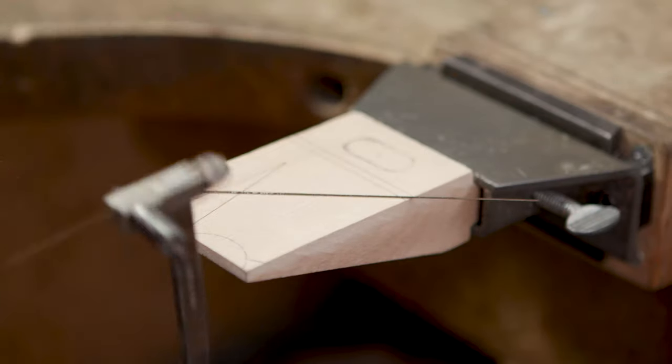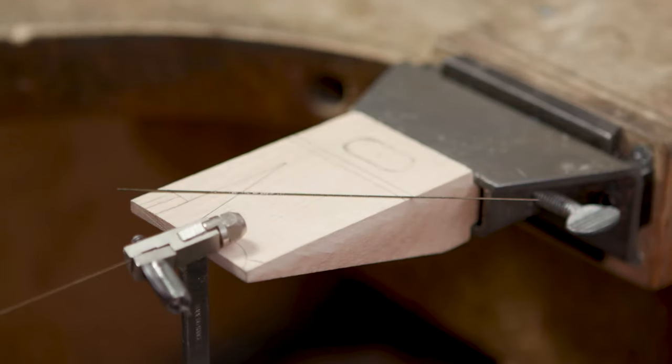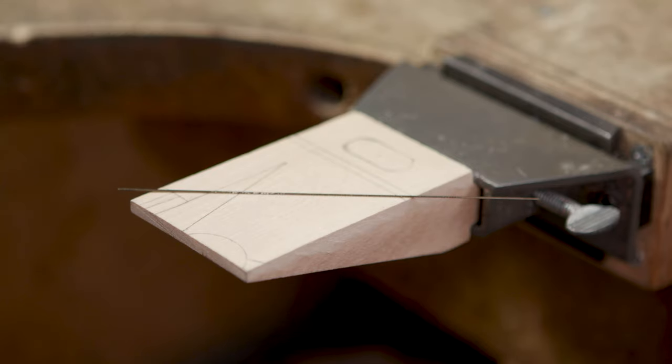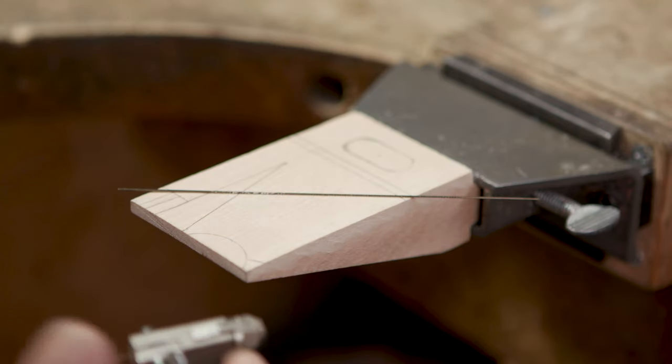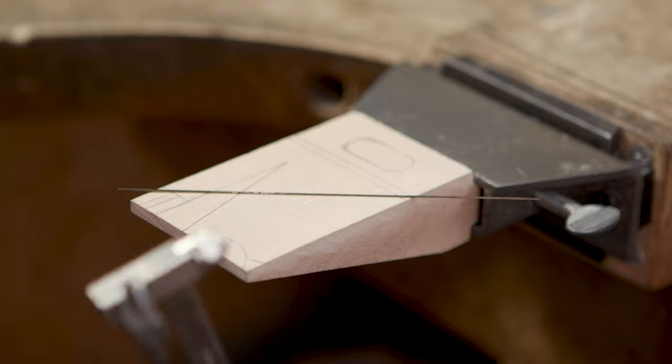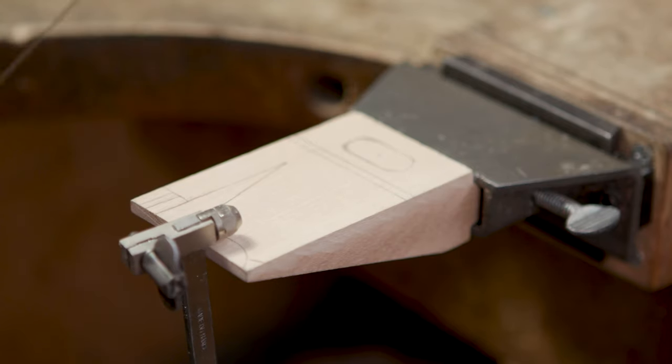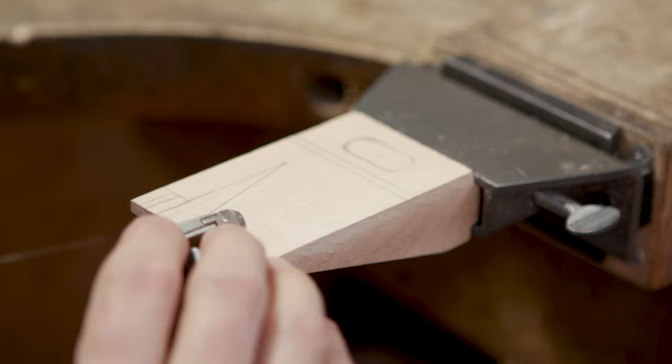So now I'm going to swap out the number two-aught blade I have in here for a number six blade. Not to be confused with a six-aught. The six is a very large blade, really great for cutting through thicker things like wood.